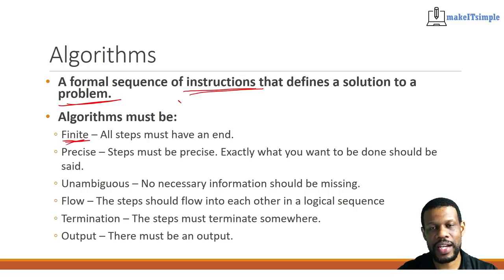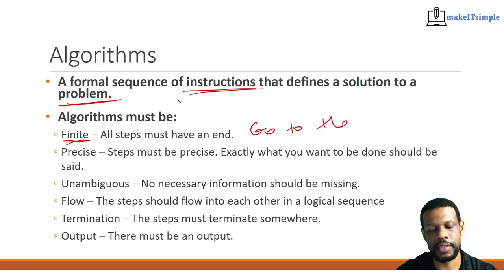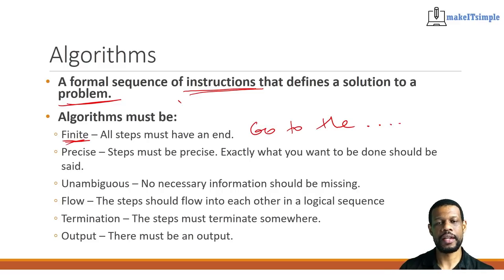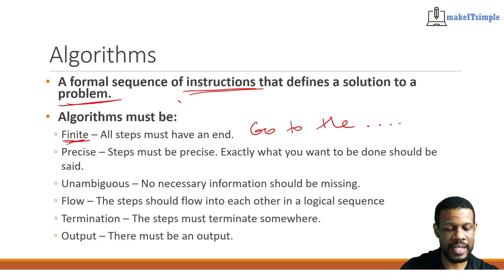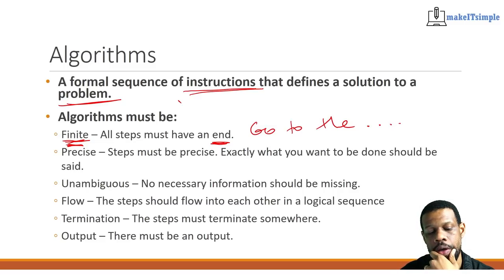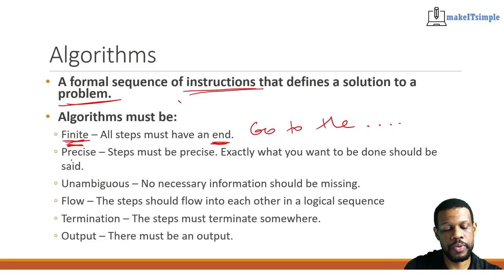It must be finite — the steps must have an end. If you say 'go to the...' without finishing the instruction, that's like telling the three-year-old child 'go to the...' and the child asks 'the where?' That means your step is not finite. It doesn't have an end, it doesn't have clarity about what is supposed to happen. The next characteristic is precise — the steps must be precise. Exactly what you want done should be stated. Instead of saying 'go to the,' you should say 'go to table number 17.' That clearly states what table you're going to.